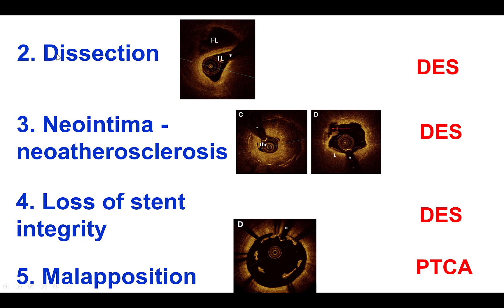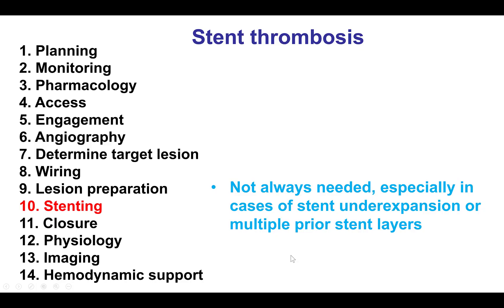If the cause of stent thrombosis is dissection, then another stent is typically placed to cover the area of dissection. The same applies for cases due to neointima formation and neoatherosclerosis. A stent is also placed if there is loss of stent integrity such as stent fracture or longitudinal deformation. If the stent is malapposed, then balloon angioplasty is done to appose the stent struts.